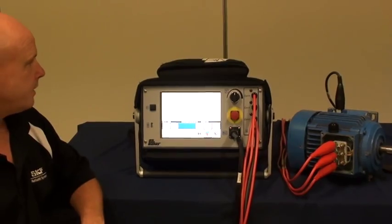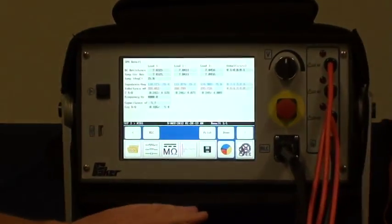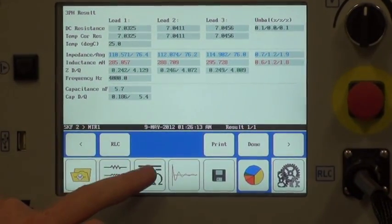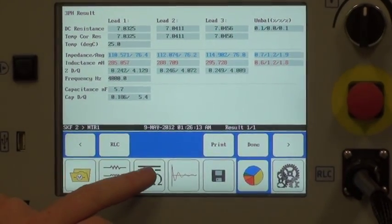Once connected, I now need to move from my low-voltage test screen to my high-voltage test screen. I do this by simply activating the high-voltage DC test button here.